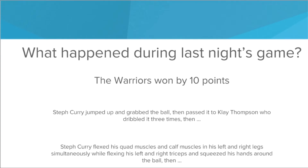Honestly we could go even deeper, because flexing quad muscles is a complicated process and we could talk about the biochemistry and the reactions happening in muscles to make this happen. But that is just way too much detail — TMI. So by choosing to respond with the top answer, the Warriors won by 10 points, you have successfully used abstraction.